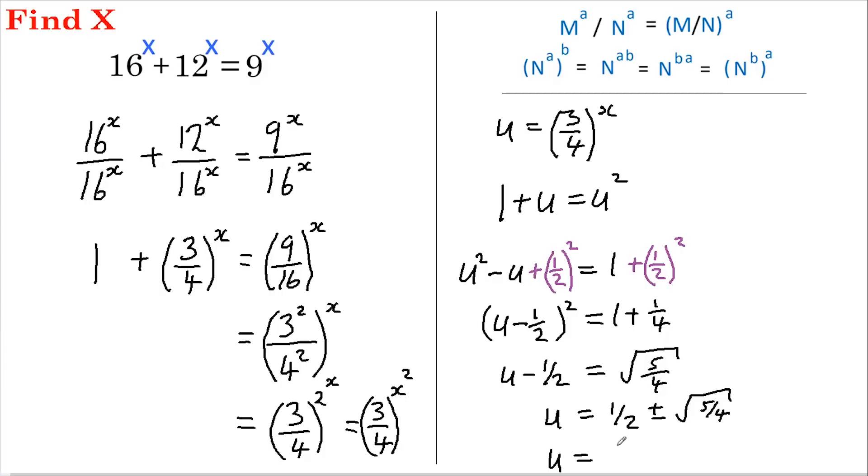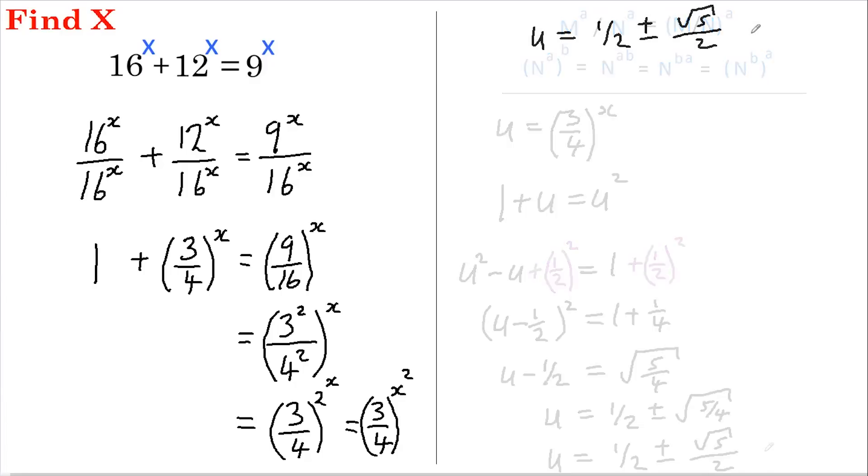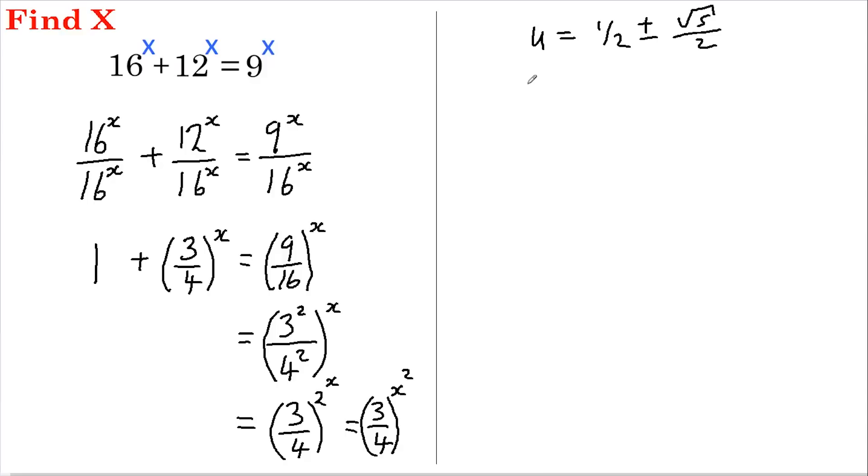Or u equals 1 half plus or minus root 5 over root 4, which is root 5 over 2. If we now substitute back in 3 quarters to the power of x for u, this equals and we can rearrange this as 1 plus or minus root 5 over 2.